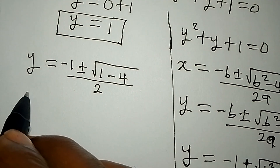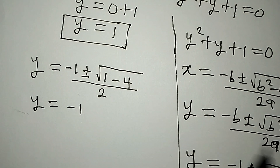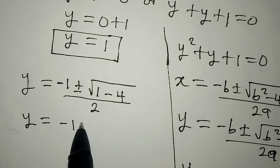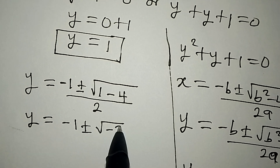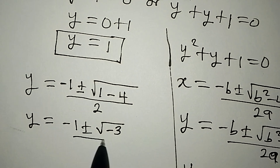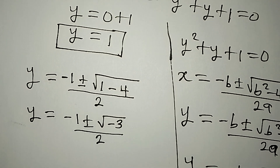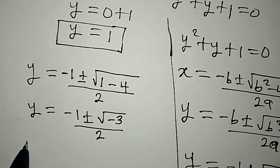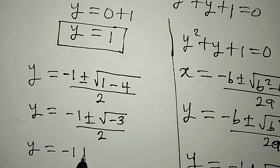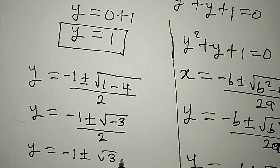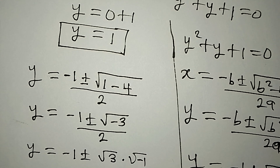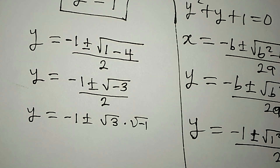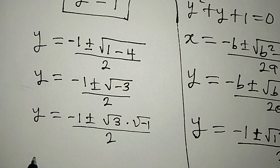So y equals minus 1 plus or minus square root of negative 3, because 1 minus 4 is negative 3, all over 2. We can't take the square root of a negative directly, so we separate it: square root of negative 3 equals square root of 3 multiplied by square root of negative 1. The whole expression is over 2.